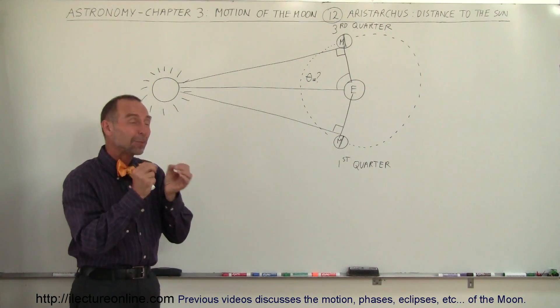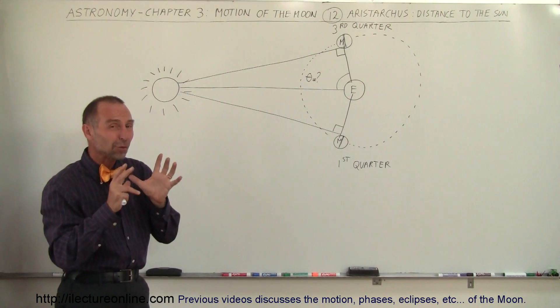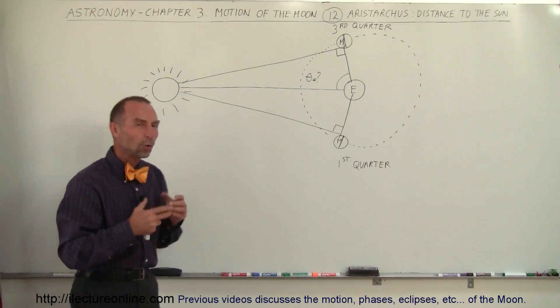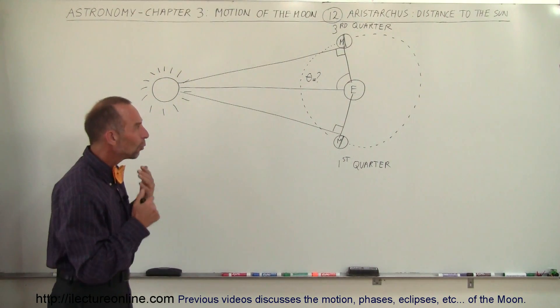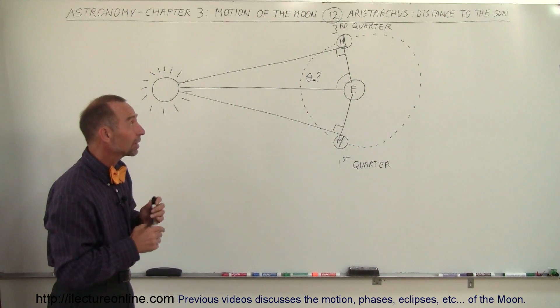What's really interesting is they were able to figure out the size of the earth, the distance to the moon, and the size of the moon. That was already known to a fairly accurate amount. But they didn't know how far it was to the sun or how big the sun was. So what Aristarchus tried to do, he came up with this brilliant idea.